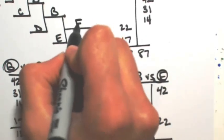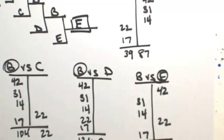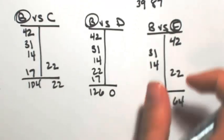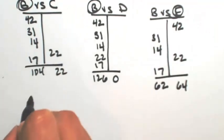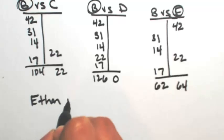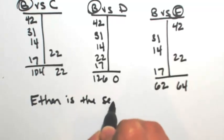And so E is the overall winner. Even though B beat everybody else, it's only the last competition that matters. So all in all, E, in other words Ethan, is the sequential pairwise winner.